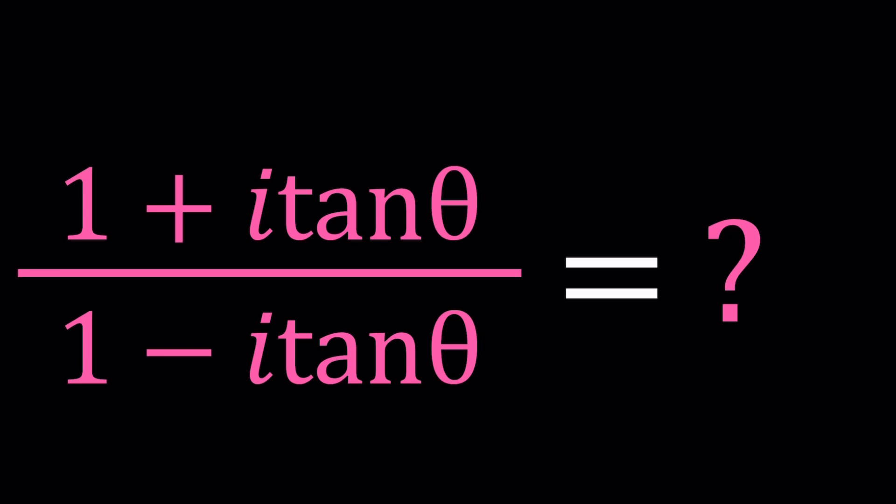Great, so we have an expression that is trigonometric and also complex imaginary at the same time. All of that, you got it all. So we have 1 plus i times tangent θ divided by 1 minus i times tangent θ and we're going to simplify this expression. How do you simplify it? There's a couple of ways to do it. So let's go ahead and take a look.